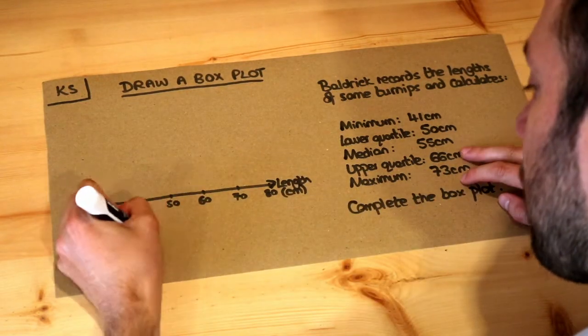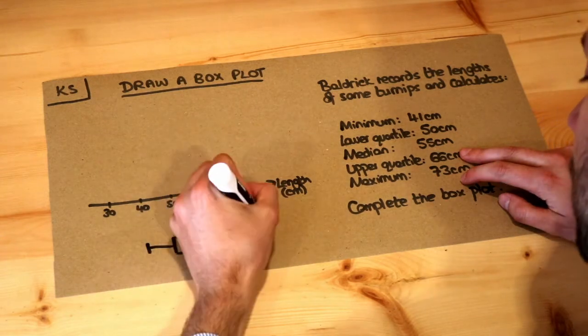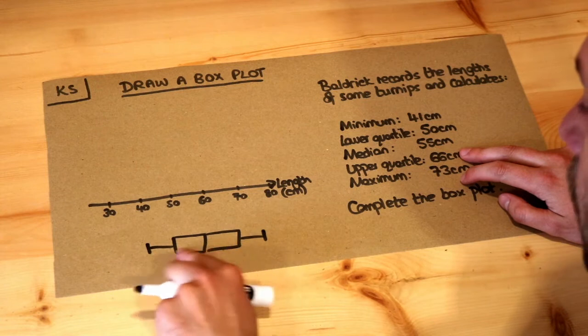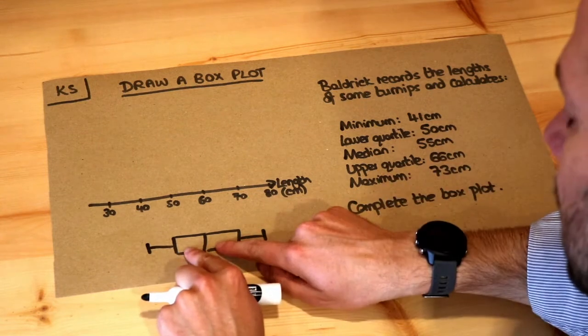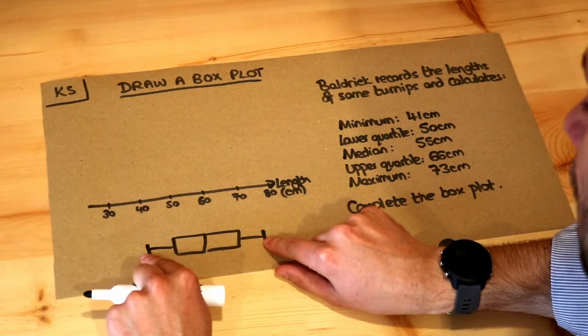But a box plot looks something like this if I draw it off this axis for the moment. You have a box in the middle which is split into two sections, they may be of different widths, and then you have what's known as whiskers.